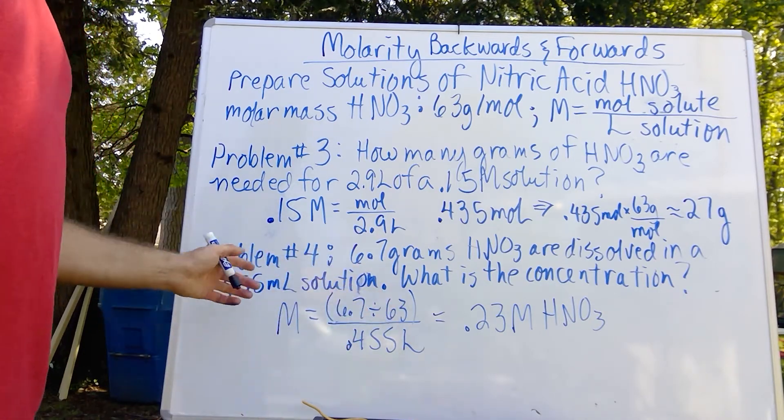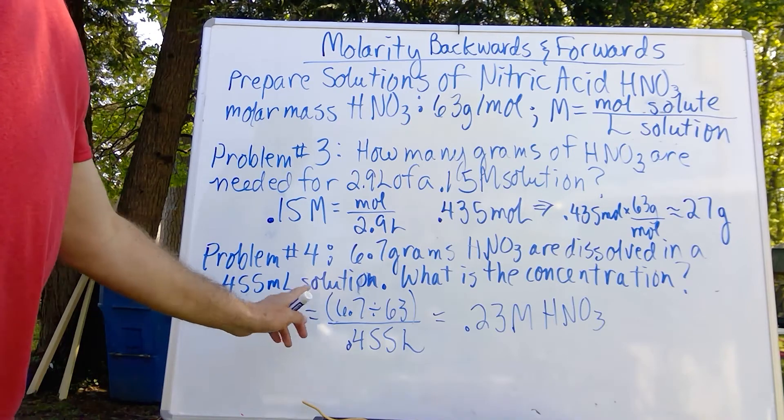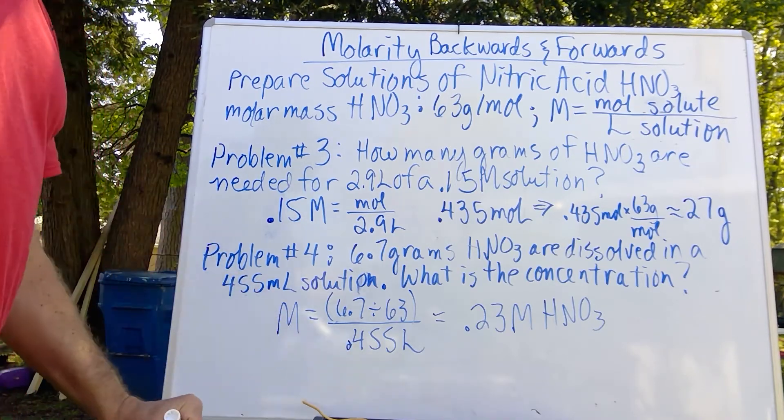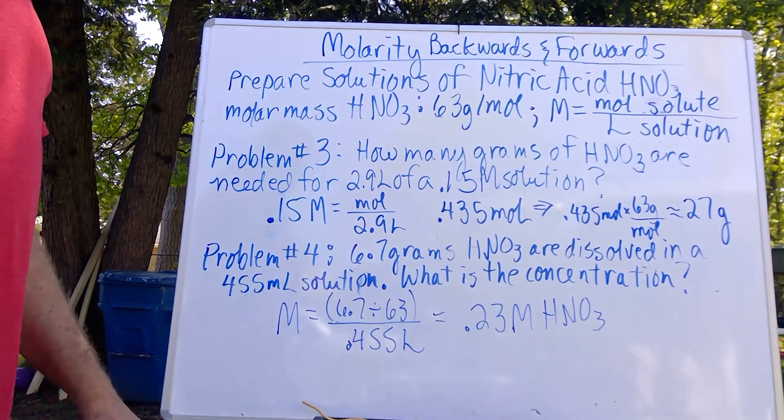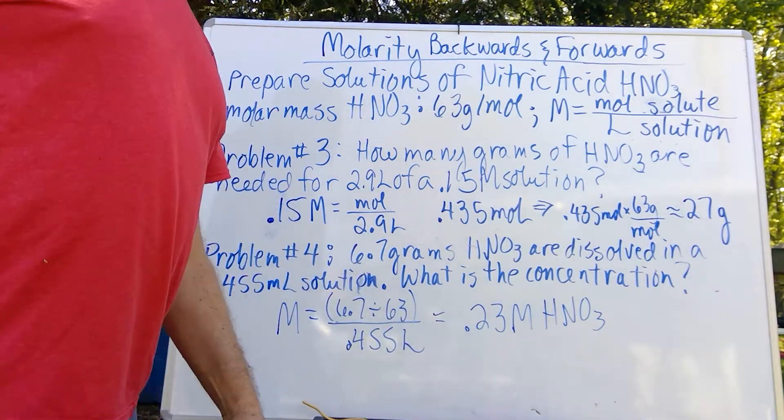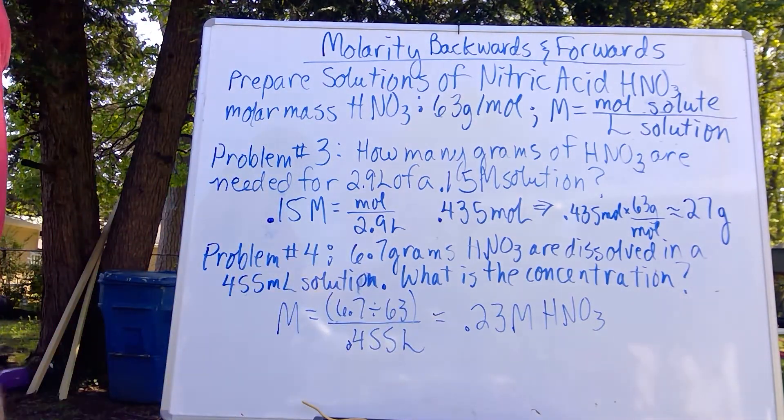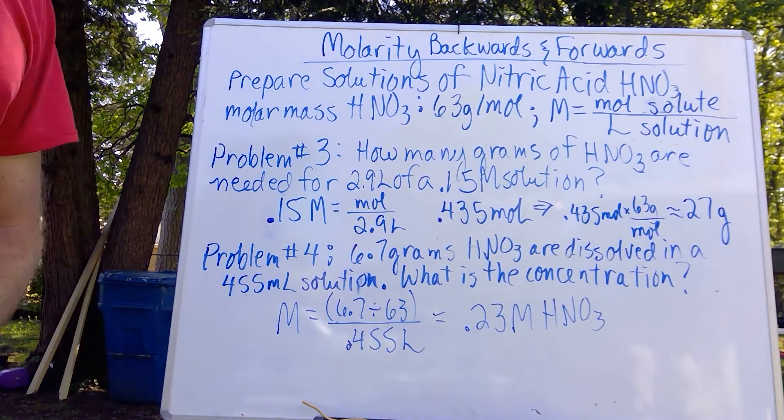Notice how I turn milliliters into liters. That is absolutely essential, and we get a concentration of 0.23 molar of nitric acid.